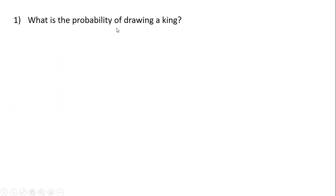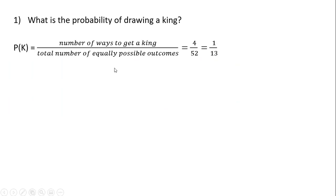So let's start. What is the probability of drawing a king? The number of ways to get a king in a 52-card deck — there are four kings: king of hearts, king of diamonds, king of spades, and king of clubs. So four divided by all the equally possible outcomes, 52 cards, gives us one thirteenth.